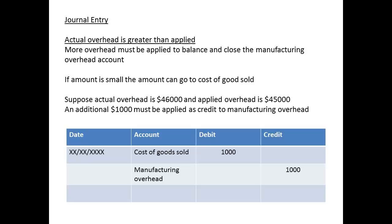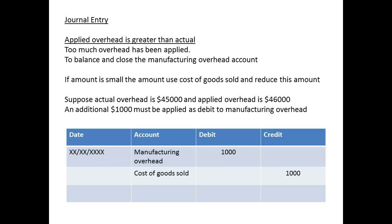Consider the case where actual is greater than applied, and there is a requirement to apply more overhead. If the difference is small, then the adjustment is made by increasing the account of cost of goods sold. Manufacturing overhead will need a small credit to balance the account, and the cost of goods sold is debited by the same amount. If the amount applied is greater than the actual manufacturing overhead incurred, then the adjustment involves a debit to manufacturing overhead and a credit to cost of goods sold.